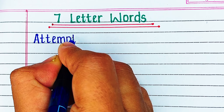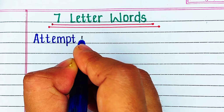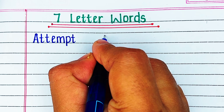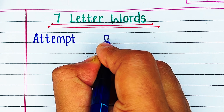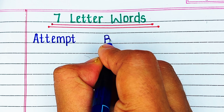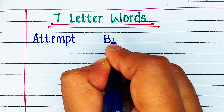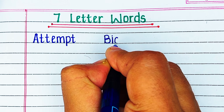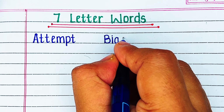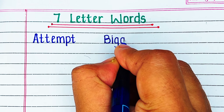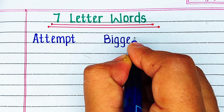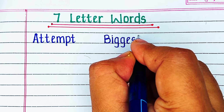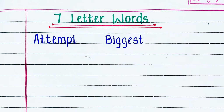First is Alphabet A. The 7 letter word is A T T E M P T, attempt. Next is Alphabet B. The word is B I G G E S T, biggest.